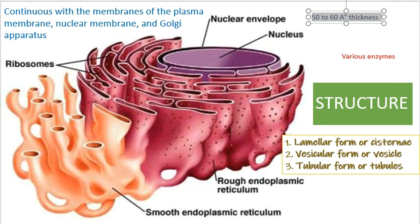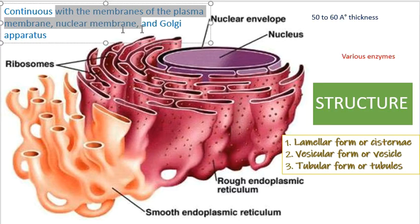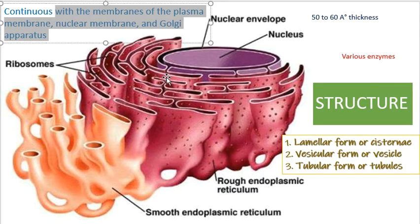The membranes of the endoplasmic reticulum contain many kinds of enzymes needed for various important synthetic activities. The most important enzymes are esterases, NADH cytochrome C reductases, NADH diaphorases, glucose-6-phosphatase, and magnesium-activated ATPases. The membrane of the endoplasmic reticulum remains continuous with the plasma membrane, nuclear membrane, and Golgi apparatus. The cavity of the ER is well developed and acts as a passage for secretory products.